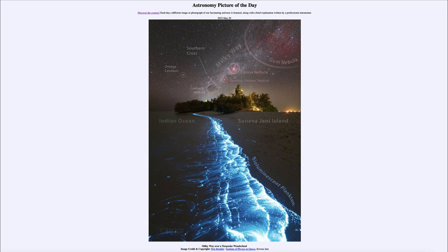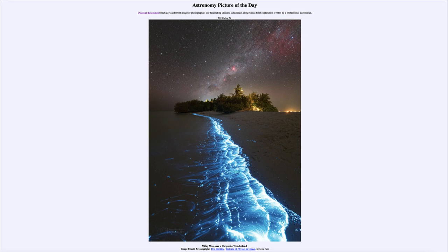In addition to seeing all of those things in the sky, we also see the bioluminescent plankton in the waves off of the island here in the Indian Ocean. That was our Astronomy Picture of the Day for May 29th of 2023, titled 'Milky Way over a Turquoise Wonderland.' We'll be back again tomorrow — the next picture preview is said to be just above Jupiter, so we'll see what that's about. Have a great day everyone, and I will see you in class.